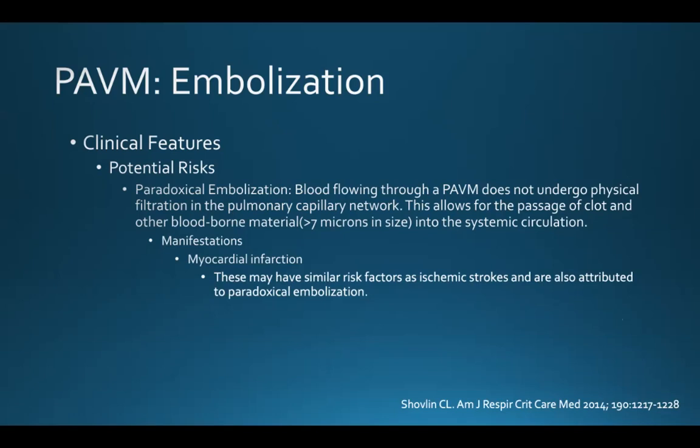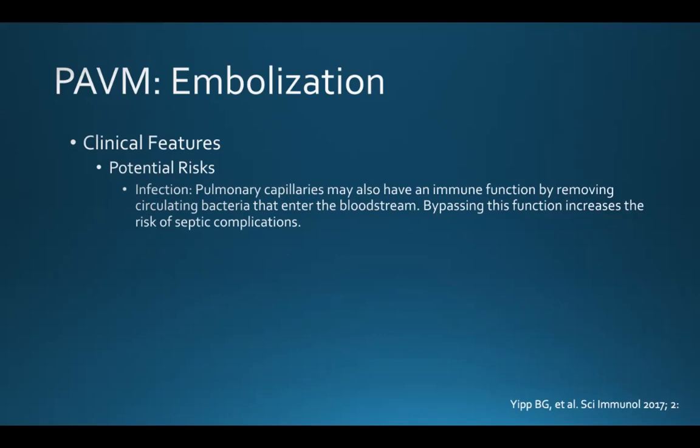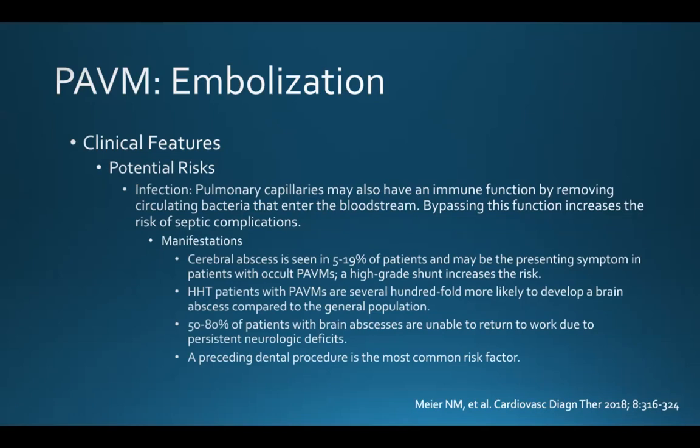PAVM patients can also have myocardial infarctions, with similar risk factors as ischemic strokes, attributed to paradoxical embolization. PAVM patients also have a risk of infection — pulmonary capillaries may have an immune function by removing circulating bacteria, and bypassing this increases the risk of septic complications. Cerebral abscesses can be seen in 5 to 19% of patients and may be the presenting symptom in occult PAVMs. HHT patients with PAVMs are several hundred-fold more likely to develop a brain abscess, and a preceding dental procedure is the most common risk factor.